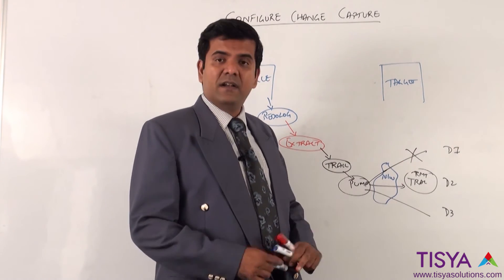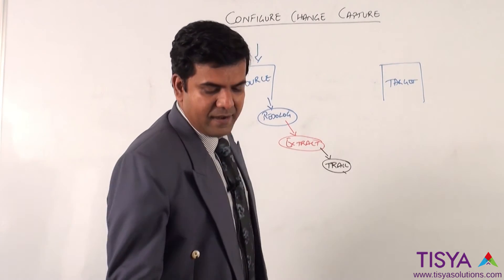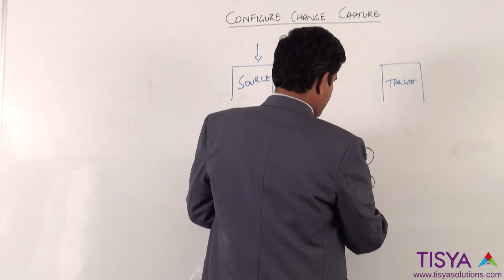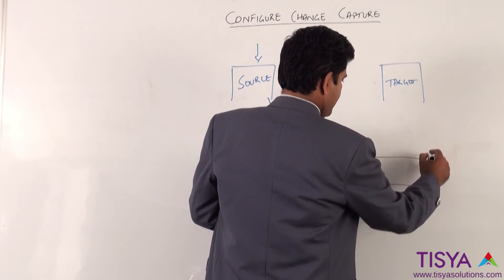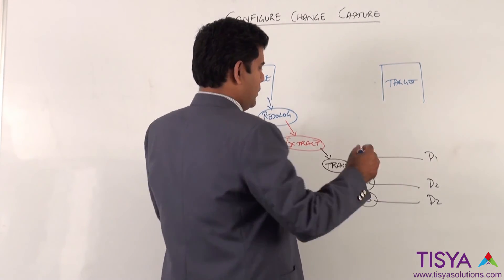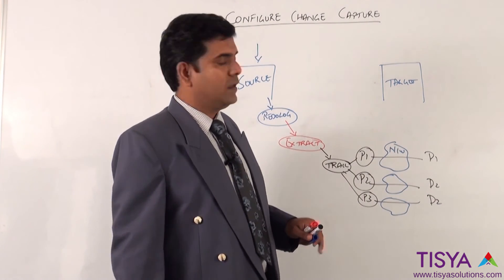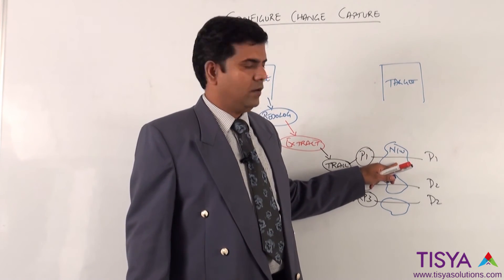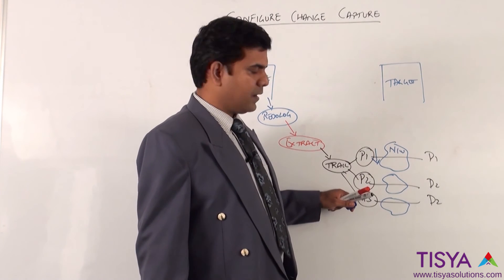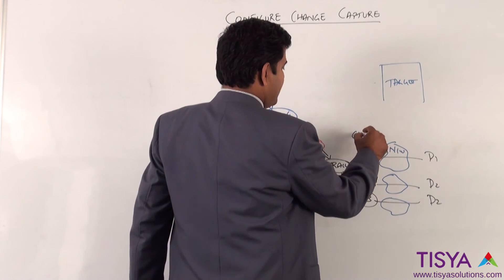The other alternative when you have multiple destinations is that you create one trail and start separate pumps which will read from the same trail and send it to individual destinations over the network. What is the benefit of this? In case destination 1 is not reachable or the Golden Gate on destination 1 is not running, pump 1 would stop but pump 2 and pump 3 would continue to pump it to the remote destinations.